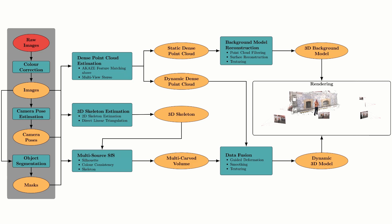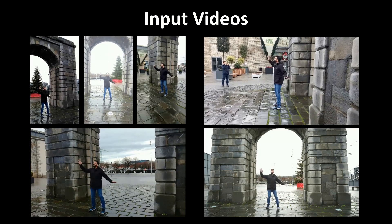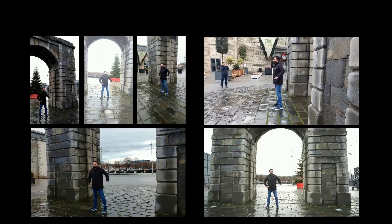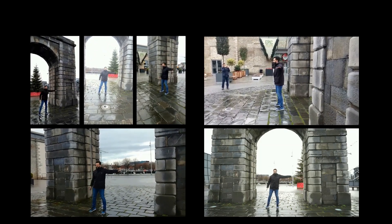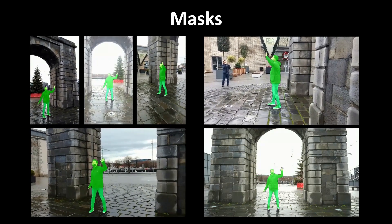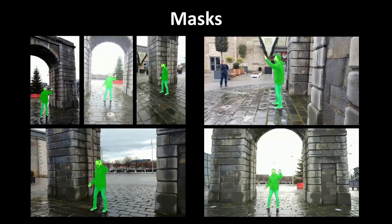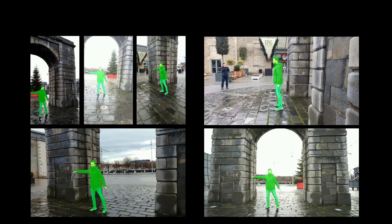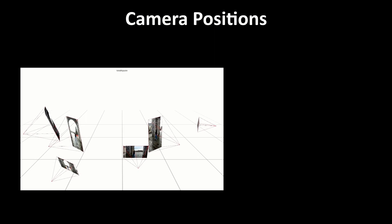Here we present an overview of our end-to-end system. Our process starts with a set of video sequences captured with low-cost consumer devices. We apply object segmentation to separate foreground and background. Camera poses are estimated in each frame of the sequence.